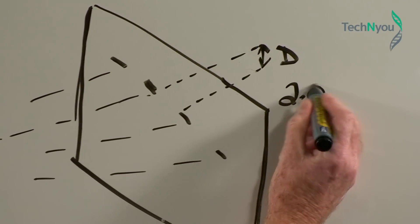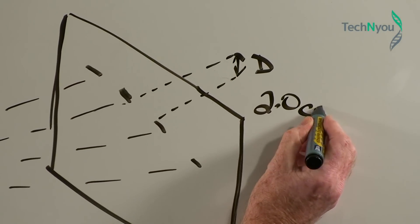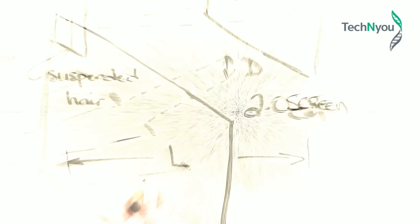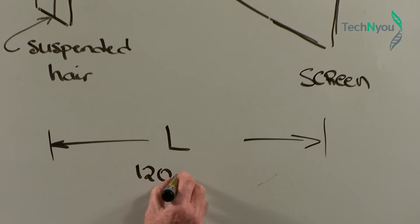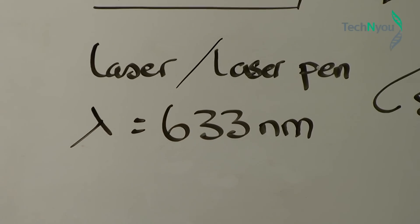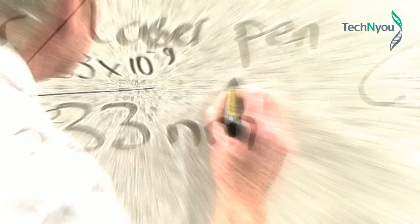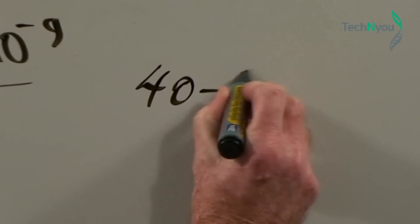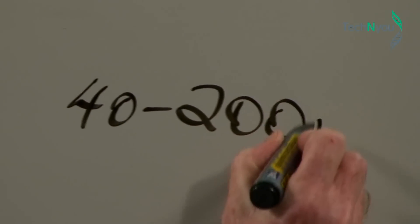Let's put some values into the formula. If D is 2 centimetres, and L is 120 centimetres, and lambda is 633 nanometres, the diameter of the human hair is approximately 40 micrometres.